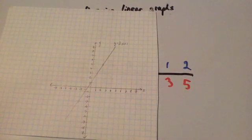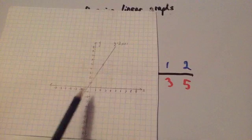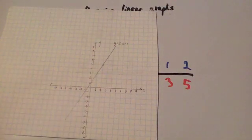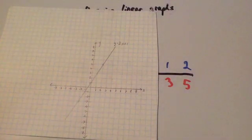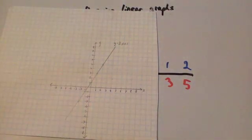Draw the line a bit longer than the points that you've done. Also, all the points were in a straight line so you could tell it was right straight away. And don't forget to label it.